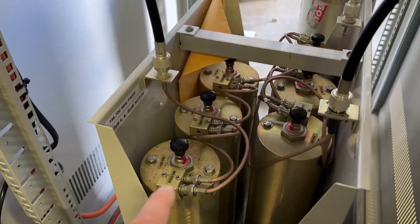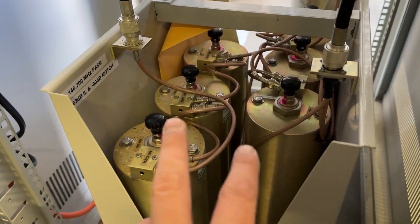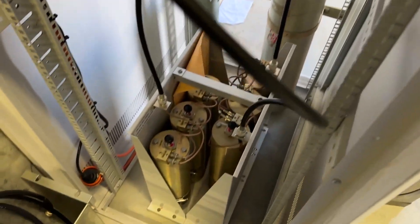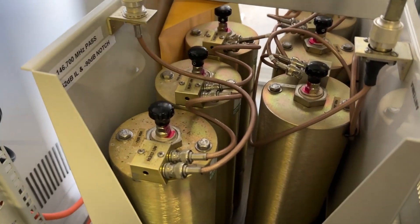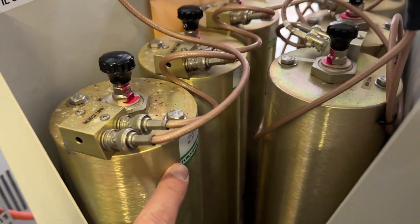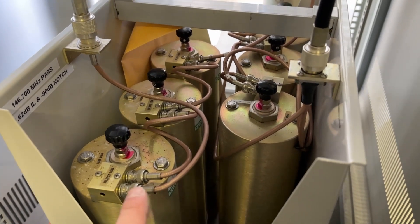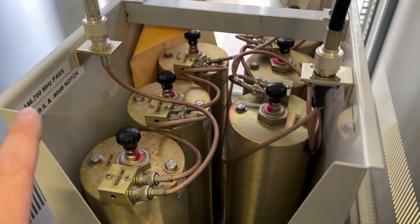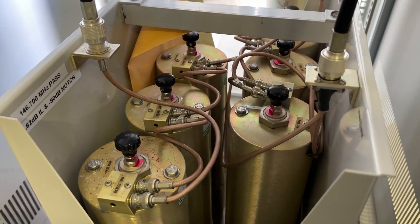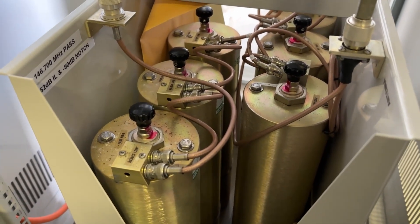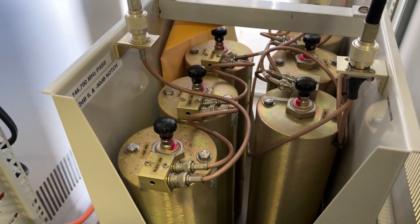So basically what we've got is here we've got three duplexers, three cavities per side. Now I think these are made by TXRX systems, and these allow us to be able to run a transmitter on 146.700 and a receiver on 146.100, 600 kilohertz apart.